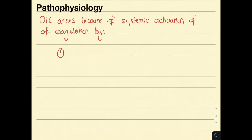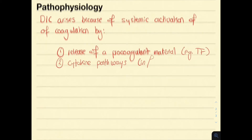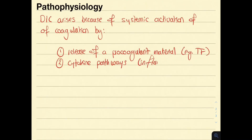Let us now discuss the pathophysiology of DIC. DIC arises due to the pathological systemic activation of coagulation. This can be activated by either the release of a procoagulant material, for example tissue factor, or by the means of cytokine pathways, so inflammation.